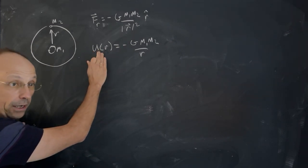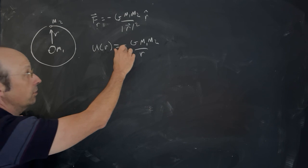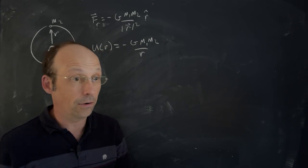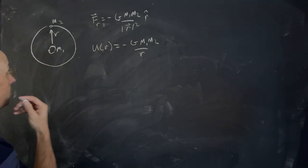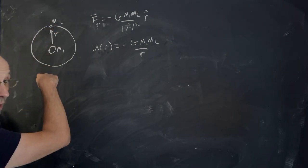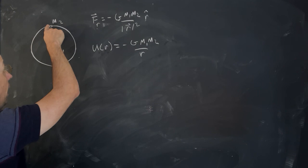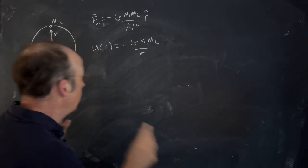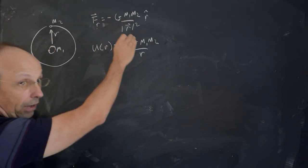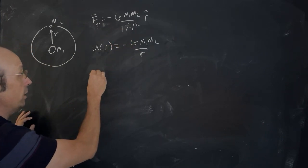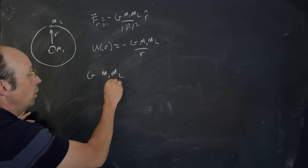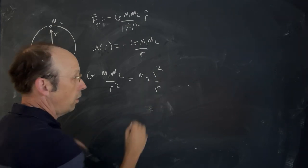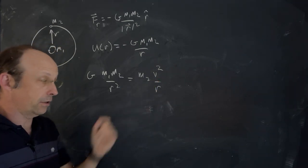We also know the gravitational potential energy term: negative g m1 m2 over r. I derived that in a previous video. In this case, let's write an expression for the energy of this object. I have this moving in an orbit with that gravitational force and it has to be equal to the mass times acceleration. So I can write g m1 m2 over r squared equals m2 v squared over r. This is the mass, that's the centripetal acceleration.